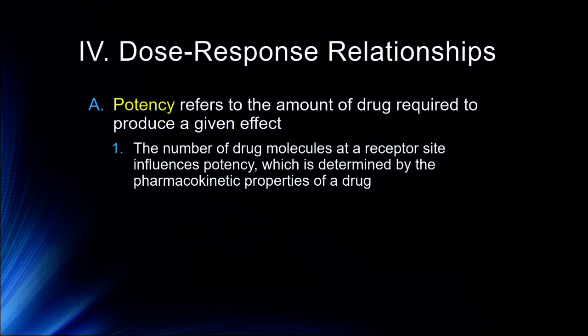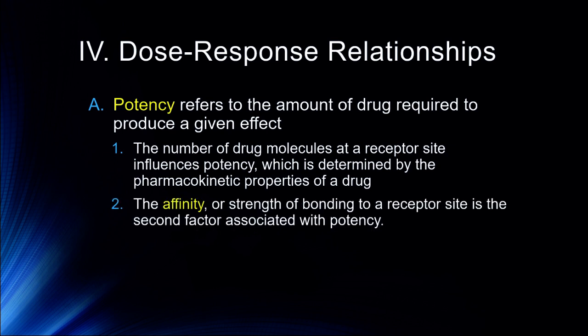The number of drug molecules at a receptor site is part of what's going to influence potency. That's determined by the pharmacokinetic properties of the drug as well as the structure of the drug itself in terms of its affinity. Affinity is the strength of bonding to a receptor site — that's the second factor. So the first factor is how much drug gets to the receptor site, and the second is the strength or affinity to a receptor site.